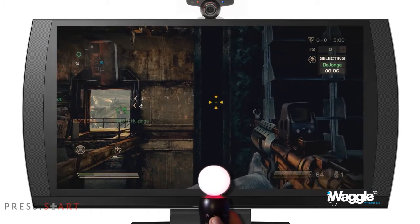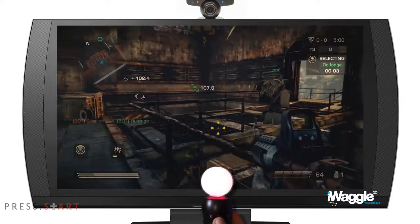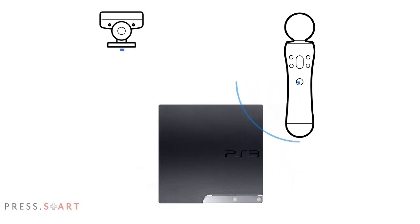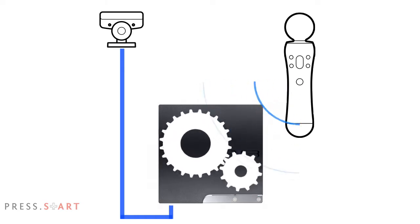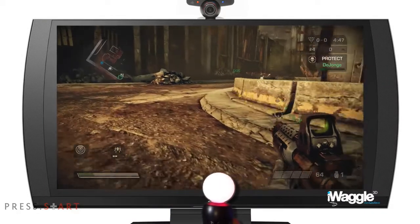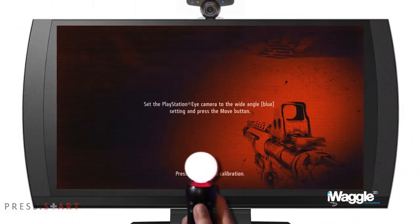The reason why such a simple motion fixes such an annoying issue is rather simple. Basically, the Move algorithms tasked with merging the Move inertial sensor outputs with the camera's tracking ones are always at work, resulting in a sort of constant recalibration, which is especially effective when the Move is pushed along the Z-axis — hence the need to thrust forward.